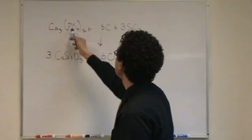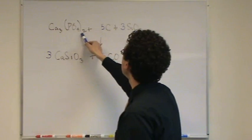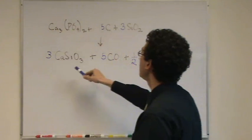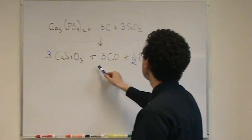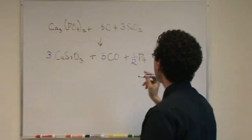3 calciums. 3 calciums. There's 2 phosphorus. 2 phosphorus. There's 8 plus 6, 14 equals 9 plus 5, 14. Now carbons 5 and 5. It looks OK.